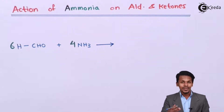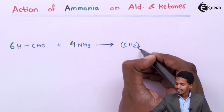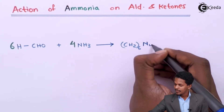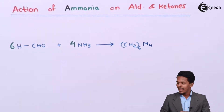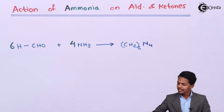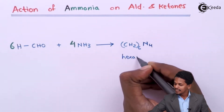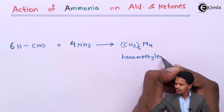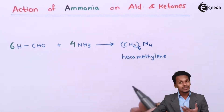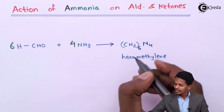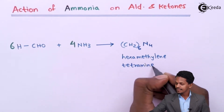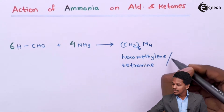The formula of urotropin is (CH2)6N4 — that is CH2 six times and nitrogen four times in the molecule. The name is hexamethylene tetramine, because there are 6 hexamethylene CH2 groups present along with 4 nitrogen atoms, hence the name hexamethylene tetramine. This is also known as urotropin.